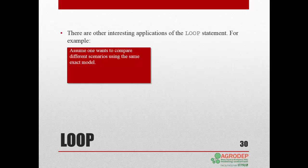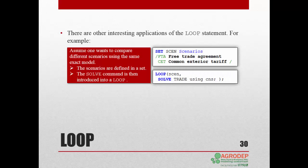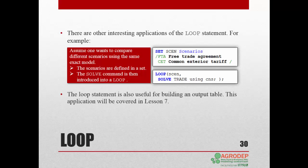Here are a few examples of when you can apply the loop statement. You may want to run different scenarios of the same exact model. You just need to define a set — for example, which contains as elements various scenarios, in this instance two trade regimes: FTA and CET. Next, you include the solve command in the loop statement and the program will run for each scenario. You can also generate an output table using the loop statement — we will cover this in detail in Lesson 7.